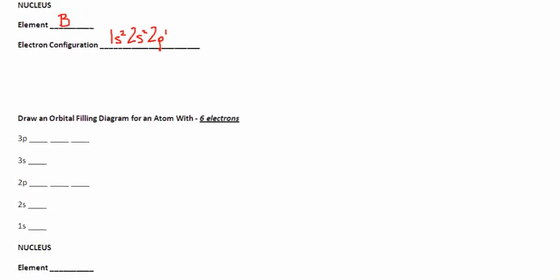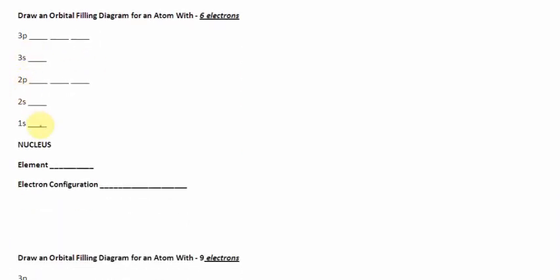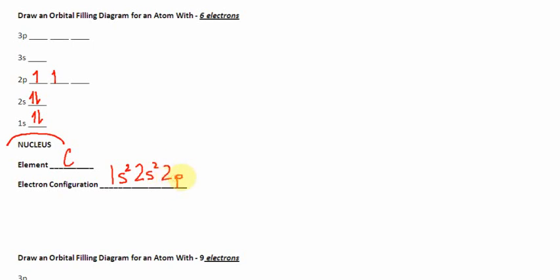Next problem: 6 electrons. I'm going to place 2 on the first energy level, 2 on the second S orbital. The electrons need to occupy the P orbitals alone because they have the same charge and repel each other — so they occupy each orbital alone first before going back. The element is carbon because it has 6 protons and 6 electrons. These are literally distances away from the nucleus. The electron configuration is 1s2 2s2 2p2 — that's the electron configuration of carbon.